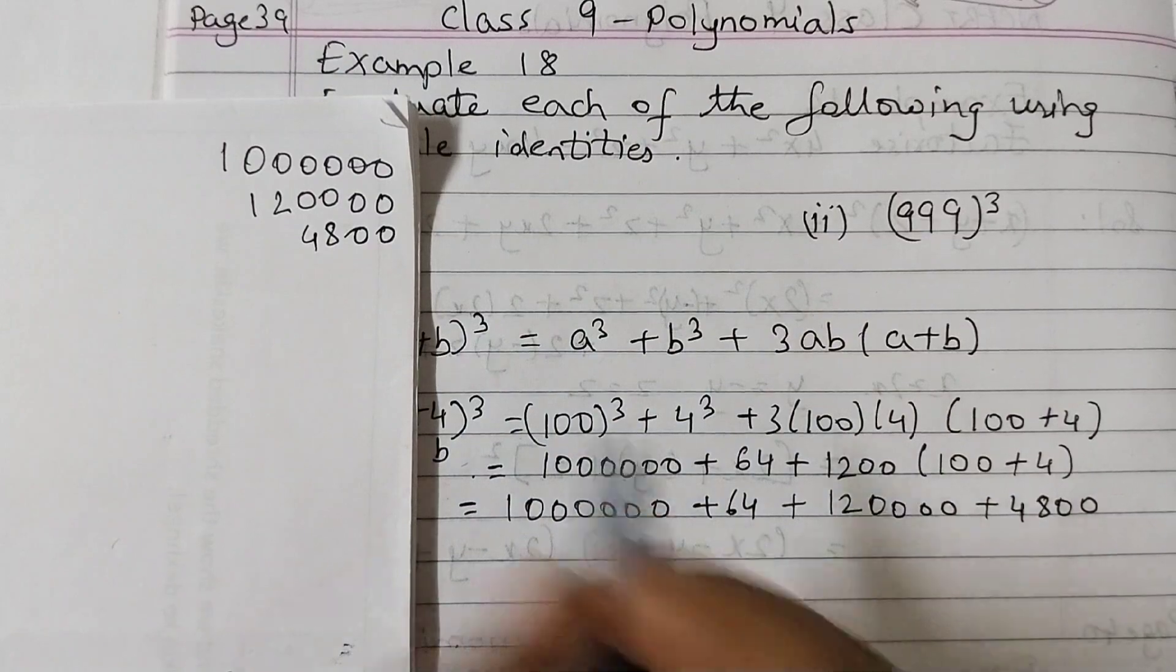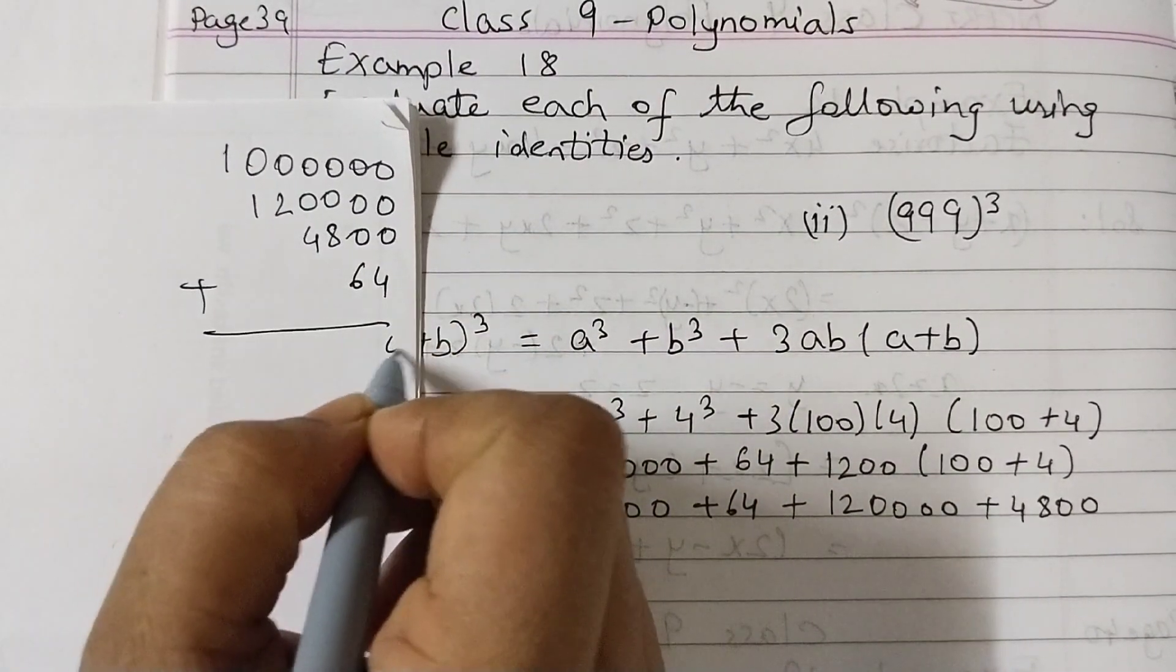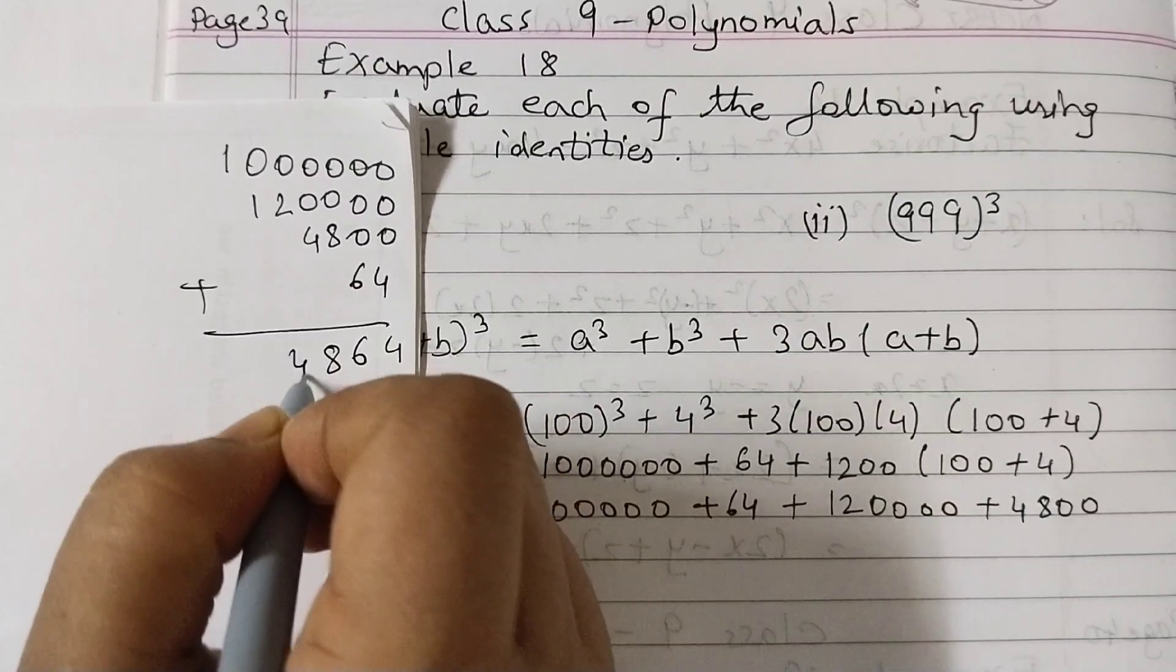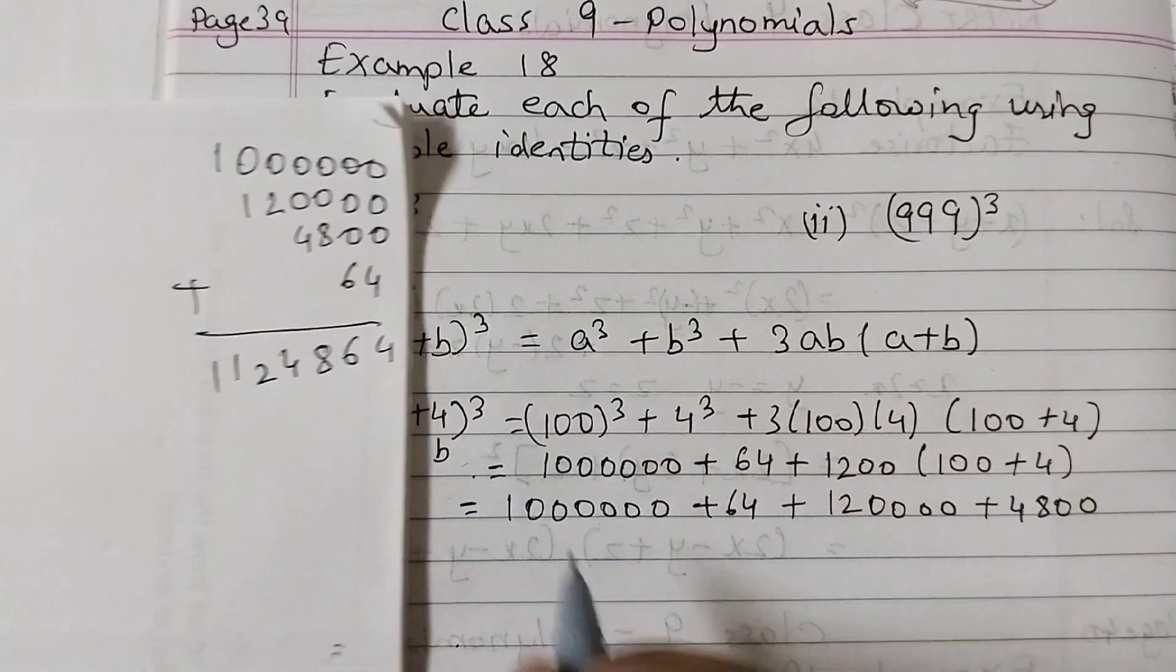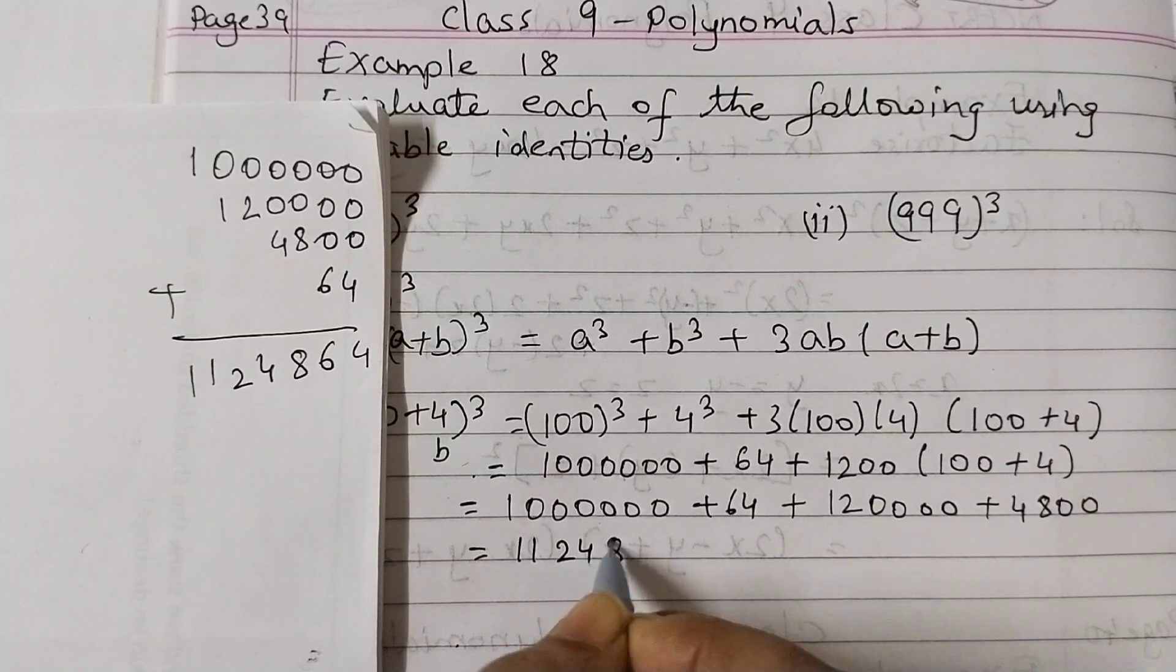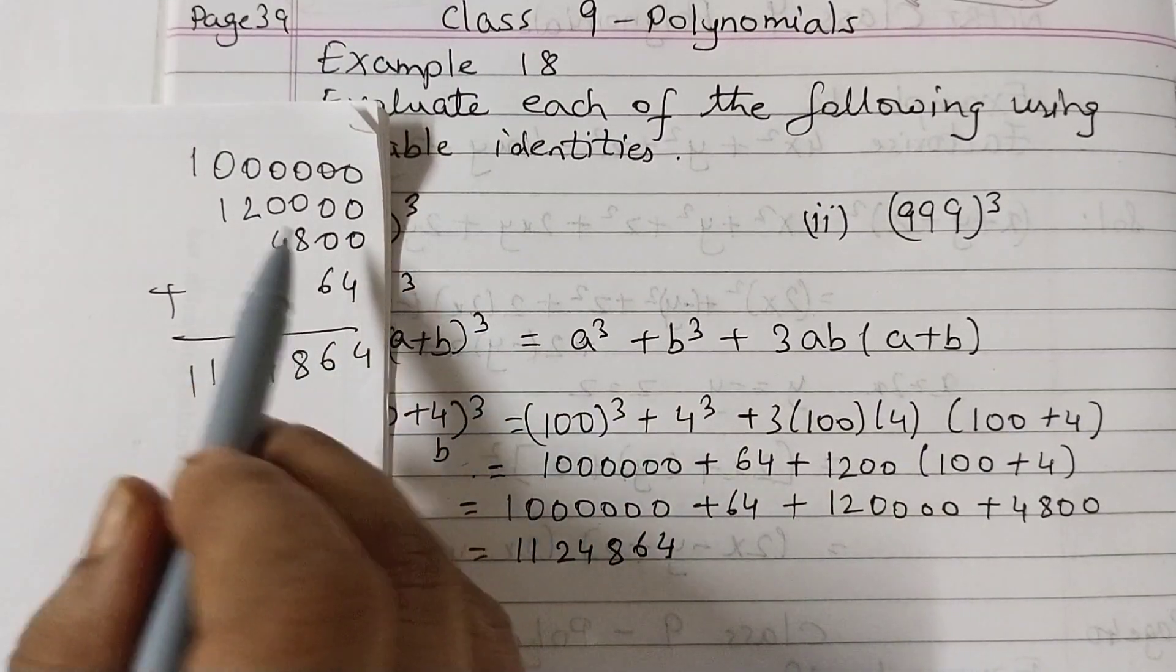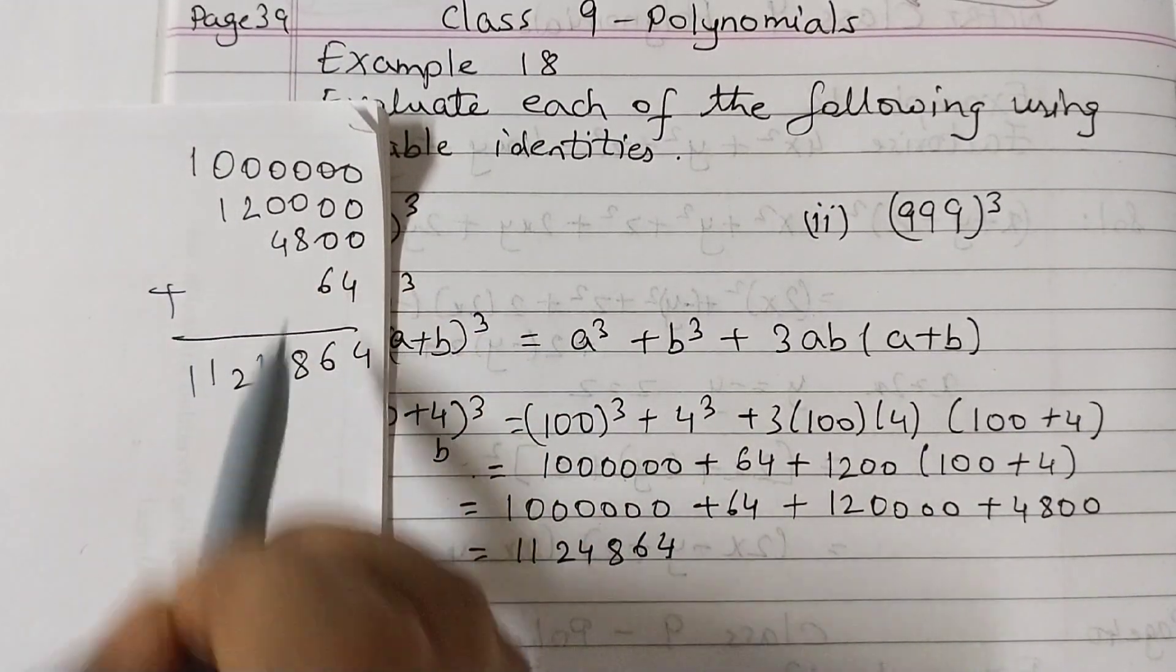Start from the right hand side so you will not go wrong. 4800, zero, zero, 8, 4, and 64. Add: 4, 6, 8, 4, 2, 1, 1. So the answer is 1, 1, 2, 4, 8, 6, 4. Be careful when you are arranging in the column, the column must be properly done.